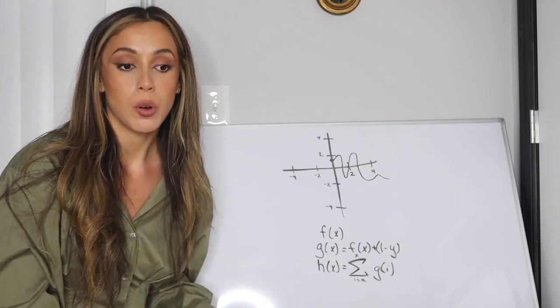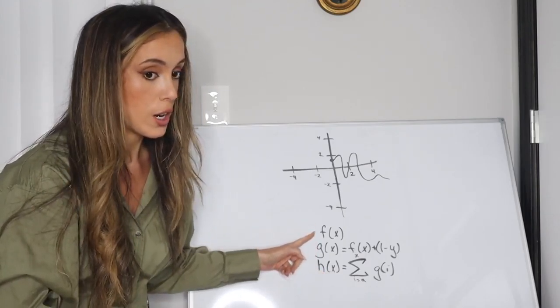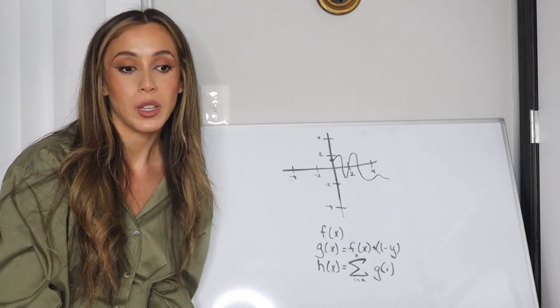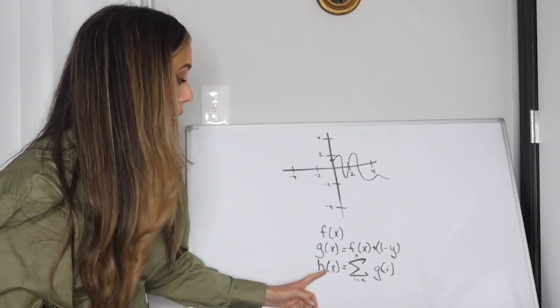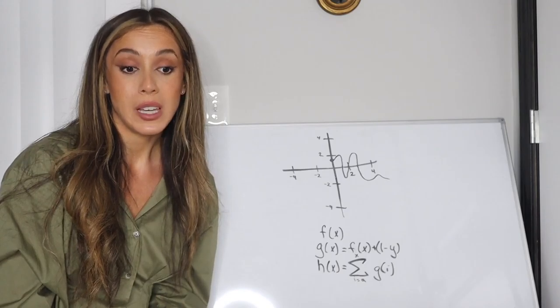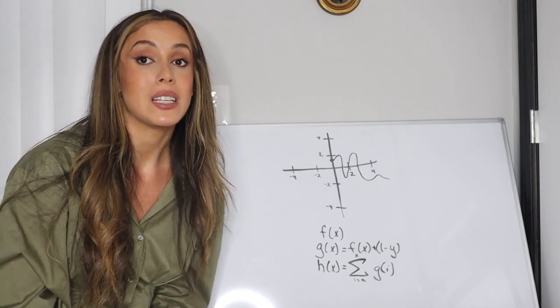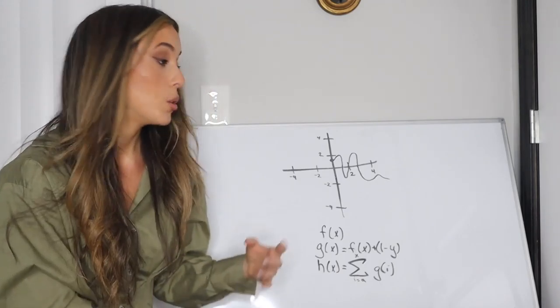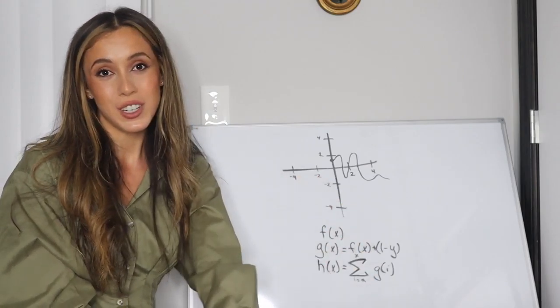Suppose we don't know the formula for the original function, but we know the formula for the partial sums of it, which would be easier to figure out since it's bijective. Could we then find a formula for the original function?